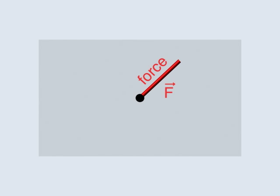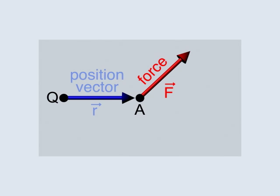Consider a force that is applied at a given point in space, point A. The position of point A is measured with respect to point Q. R is the position vector of point A, measured from point Q.